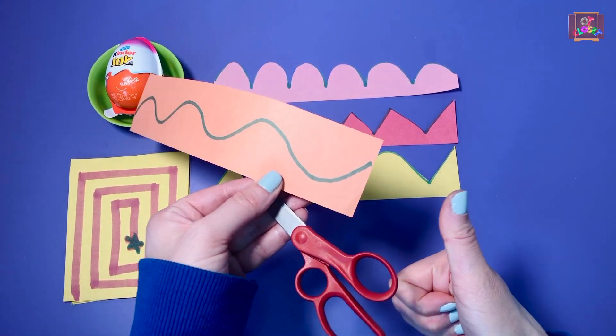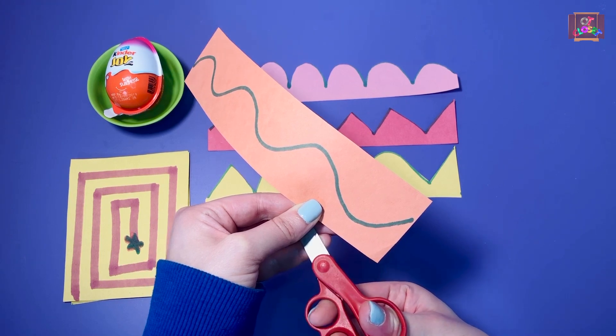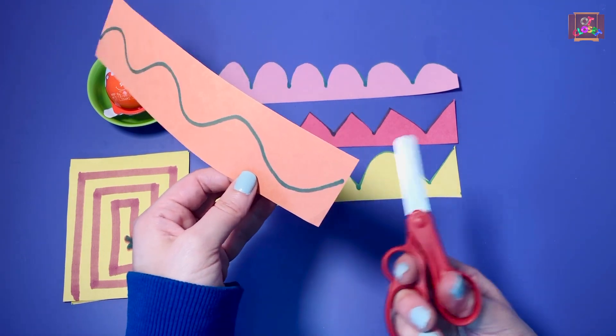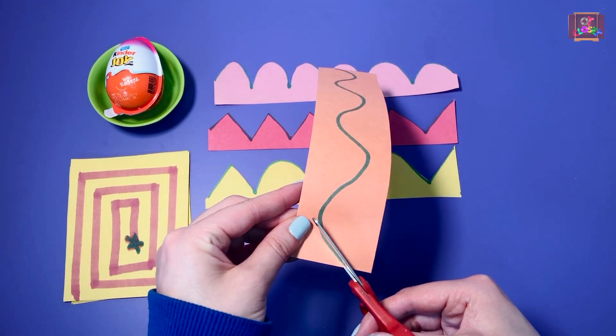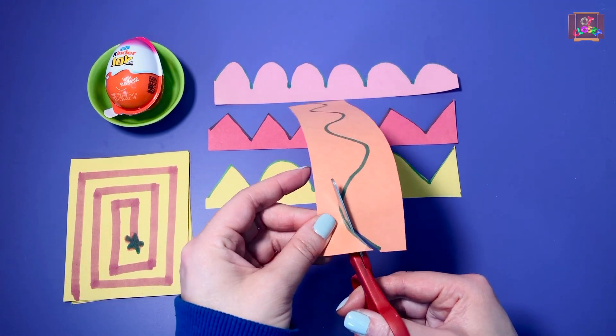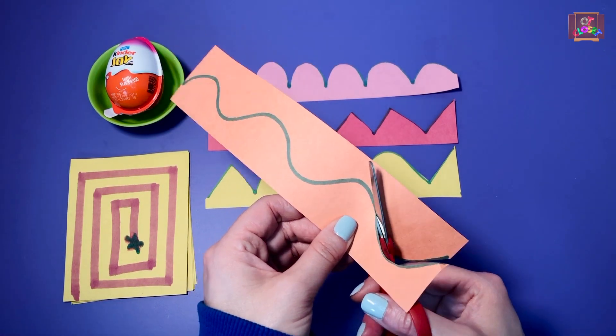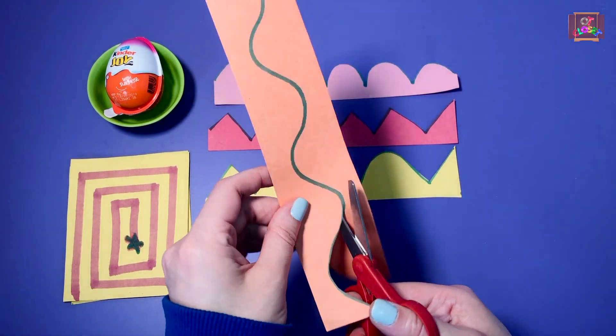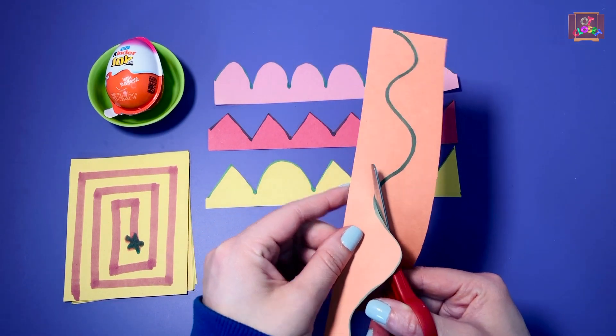Thumb in the small loop, other fingers in the big loop. Keep your fingers inside. Open, close, don't close it all the way. Follow the road, good. Go in your own pace, don't rush, slowly.